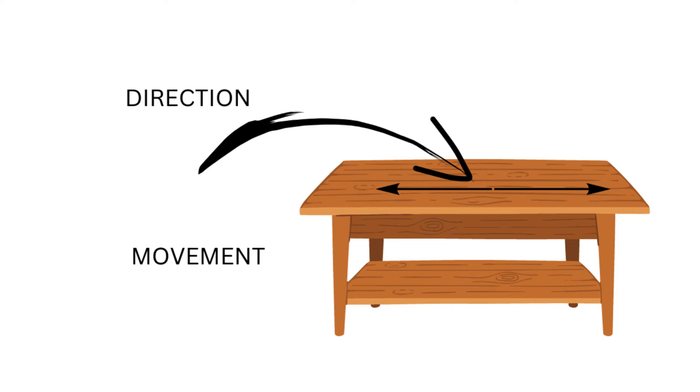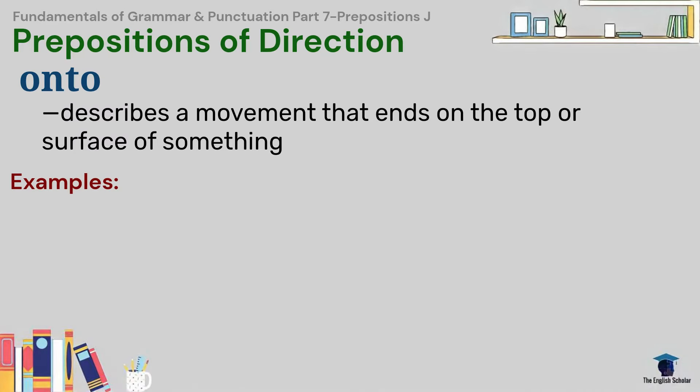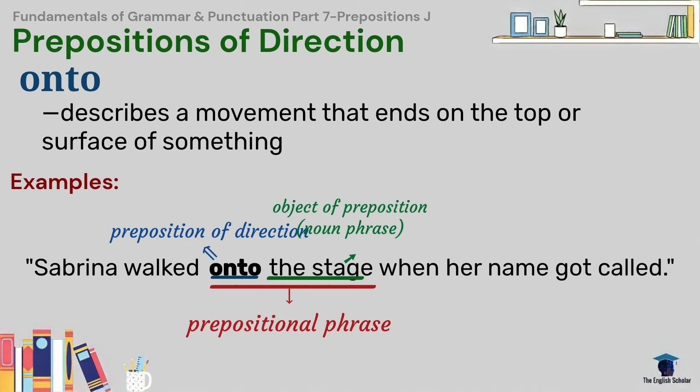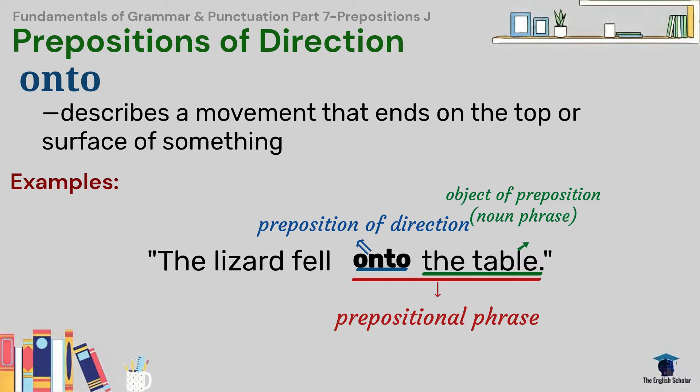Onto describes a movement that ends on the top or surface of something. For example, Sabrina walked onto the stage when her name got called. The lizard fell onto the table.